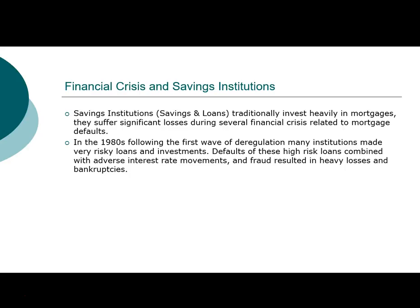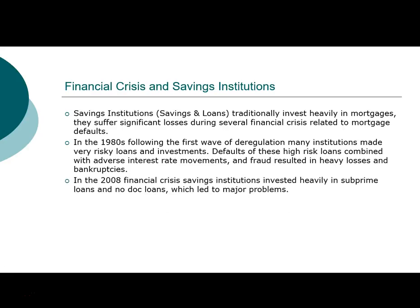Deregulation continued, and savings and loans, once they emerged from their earlier losses, re-engaged in the same lending because mortgage lending is their primary business. Once again in 2008, when the financial crisis centered around mortgage defaults, savings institutions were one of the major victims. They were also heavy participants because they led the wave in subprime loans and also no-documentation mortgage loans — called no-doc loans — which led to a lot of mortgage defaults and heavy losses by financial institutions.